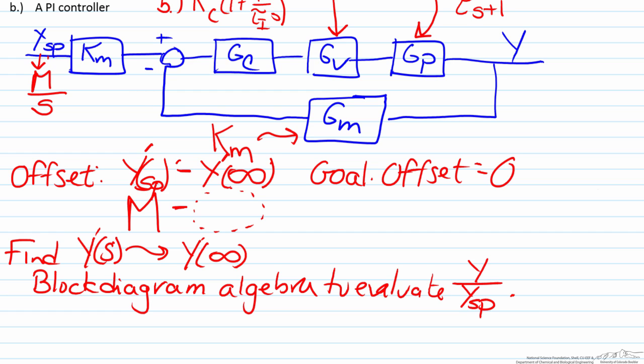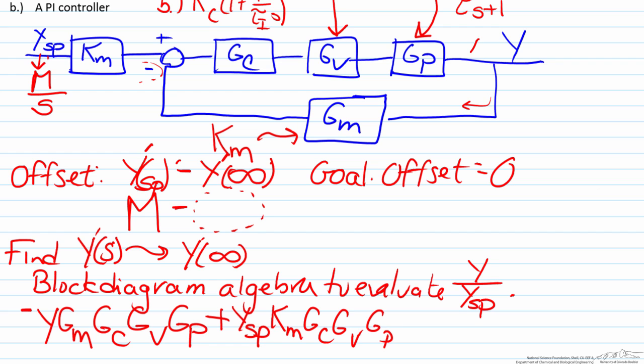So if we carry out this block diagram algebra what we can see is that we can have Y, if we go through the loop here we will see that Y multiplies by Gm, goes through further by Gc, Gv, Gp, and there will be a minus sign because of the minus that we see here. Then we also have plus Ysp multiplied by Km, Gc, Gv, Gp, and that when we come to here will equal Y.